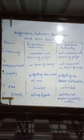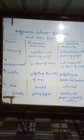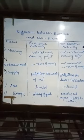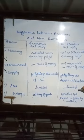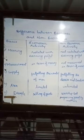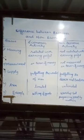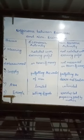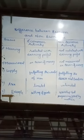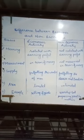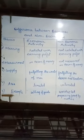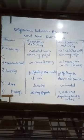Fourth: the area of economic activity is limited, and the area of non-economic activity is unlimited. The last point — examples: selling of goods, production of goods, and advertisement are examples of economic activities; and worship of God, preparing food by mother, planting of trees, and gardening are examples of non-economic activities.